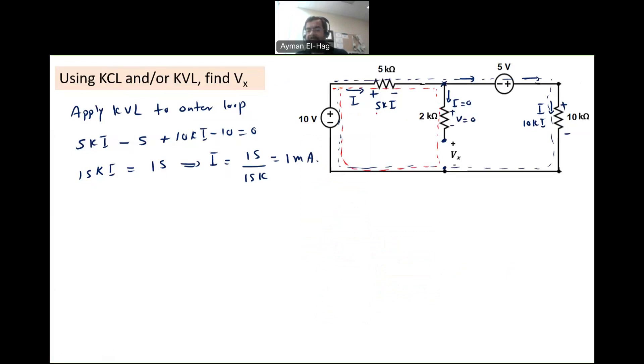So the voltage here is 5Ki. The voltage here is zero. The voltage here is the unknown Vx, and the voltage here is 10 volt. So we know all the voltages. So apply KVL to the left loop, which is in red.